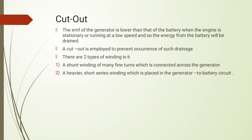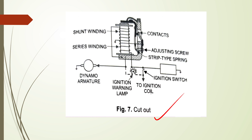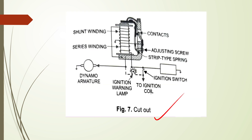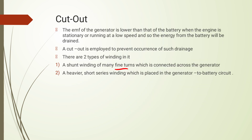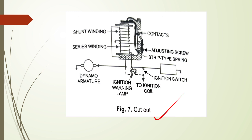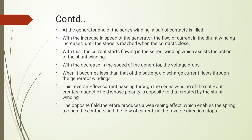In the cut-out there are end windings: a shunt winding of many fine turns connected across the generator, and a short series winding placed in the generator-to-battery circuit. At the end of the series winding there is a pair of contacts. As generator speed increases, current flow in the shunt winding increases until it closes the contacts. Current then flows through the series winding and assists the action of the shunt winding.